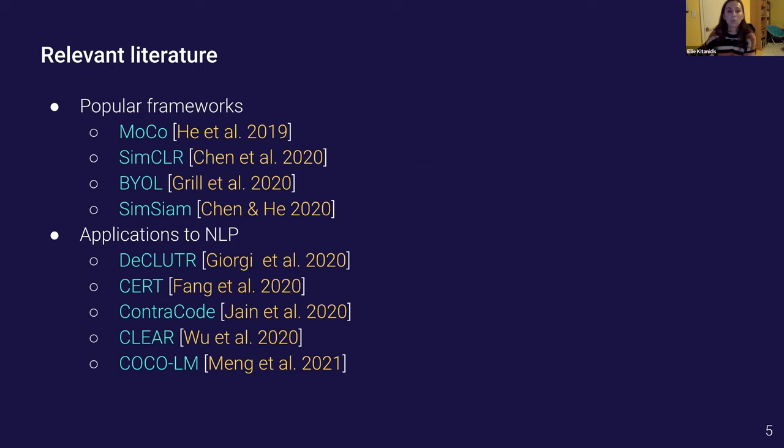While contrastive learning has become a booming area of research in computer vision, the applications to natural language have thus far been pretty limited. I've listed here under NLP basically all of the relevant papers I came across, most of which have pretty recently hit the archive just within the last few months. Because I'm limited to 10 minutes I'm not going to go through each of these individually but I'm putting them up on the slide so that you can look them up if you're interested.